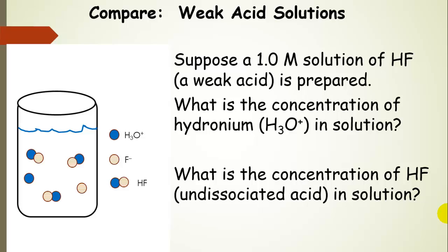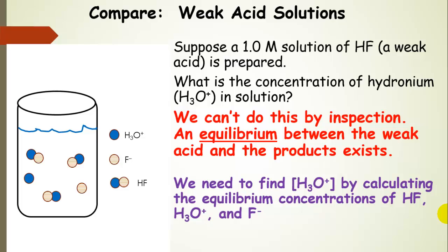What happens if we prepare a 1 molar solution of hydrofluoric acid? This is a weak acid, so what is the concentration of hydronium in solution, and what is the concentration of undissociated hydrofluoric acid? We can't determine this by inspection because there is an equilibrium between the weak acid and its products — the acid, hydronium, and fluoride anion are all in equilibrium. We need to find the hydronium ion concentration by calculating the equilibrium concentrations, making this an equilibrium problem like those in the previous chapter.